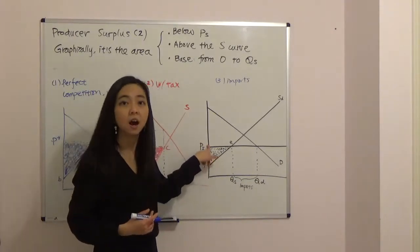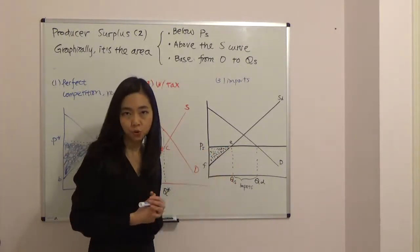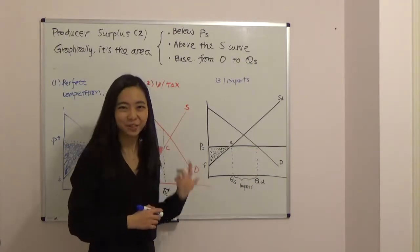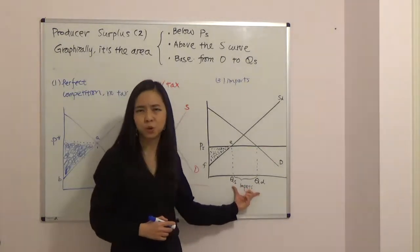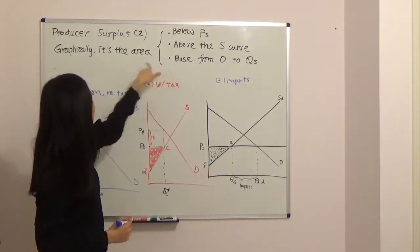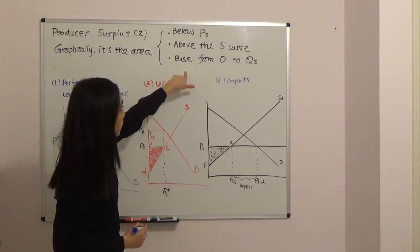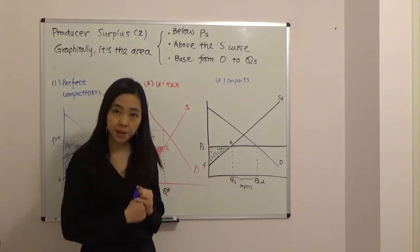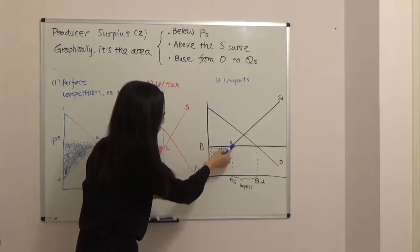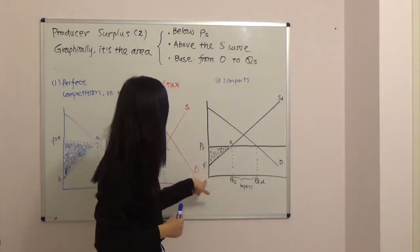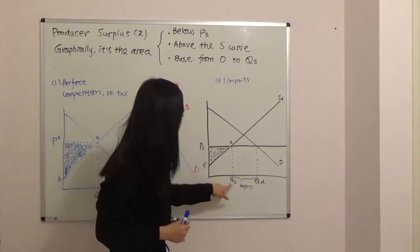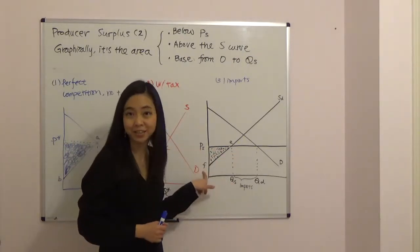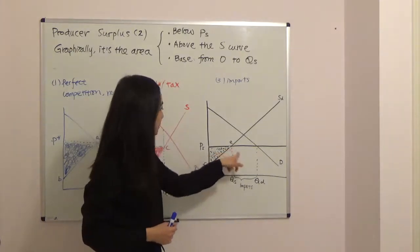Given price PI, our quantity demanded is QD, which is larger than QS. Therefore, the difference will be imports. For producer surplus, you apply the same tip: it's the area below the price received by the seller — now the international price PI — above the supply curve. The base of the triangle is from zero to the quantity supply in the market, which is only QS, not QD.